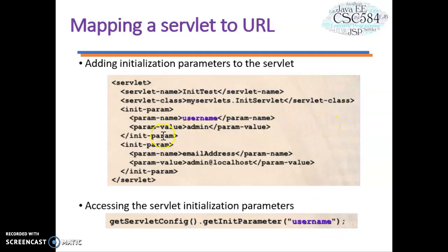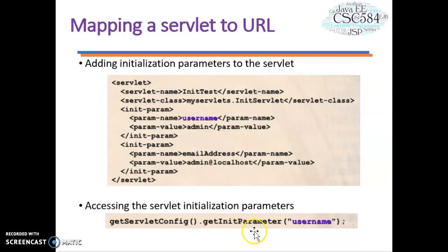In the deployment descriptor, we can also add initial parameters to the servlet. The syntax shows how to add initialization parameters using the init-param element, with param-name followed by param-value, and closed by the init-param tag. In your servlet, you use the getServletConfig method and call getInitParameter, passing the parameter name such as 'username', to access the value defined in web.xml.